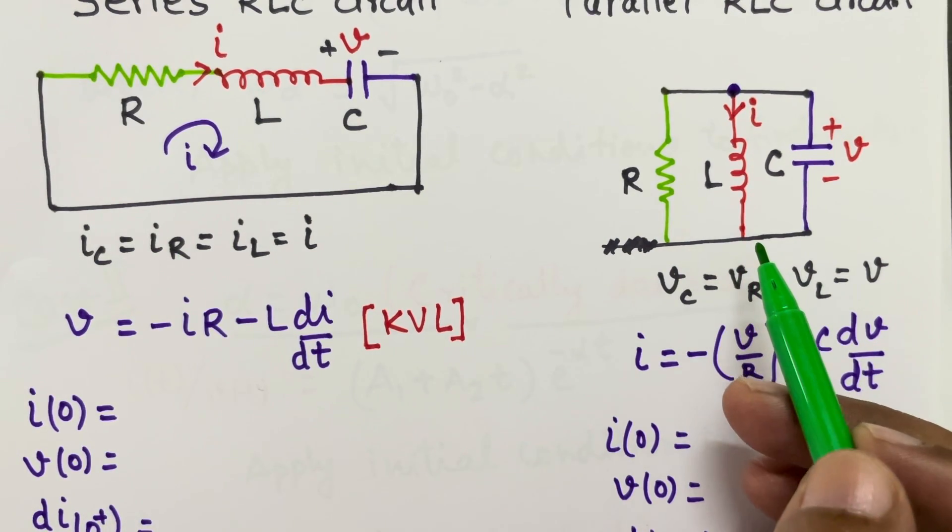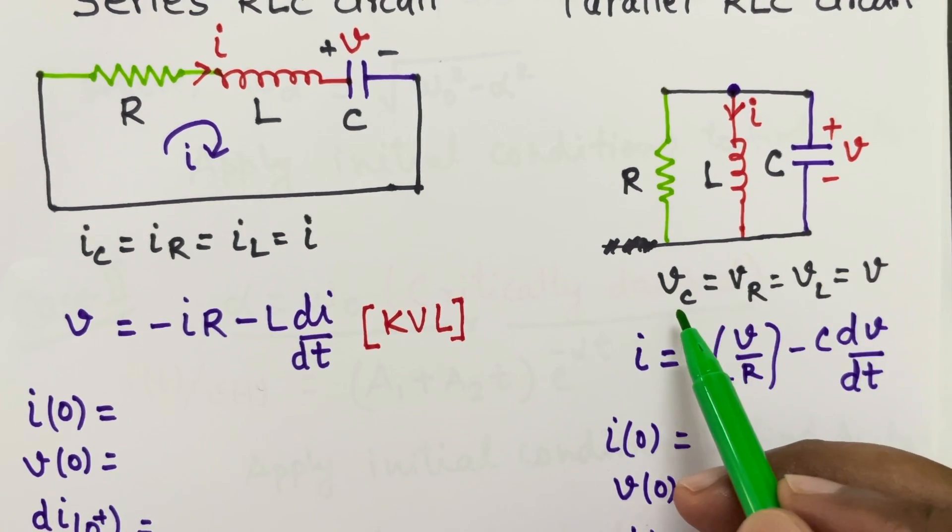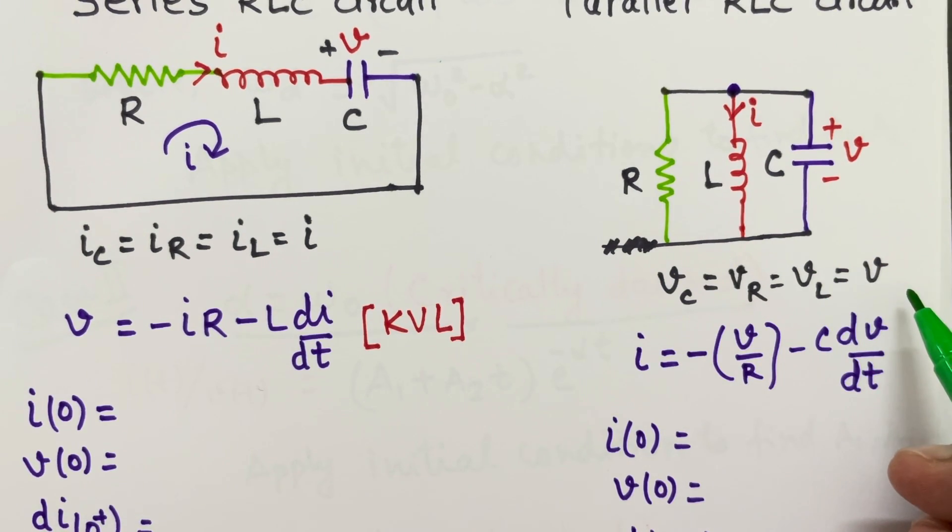In parallel RLC circuit voltage is same. So VC, VR, VL everything is equal to V.